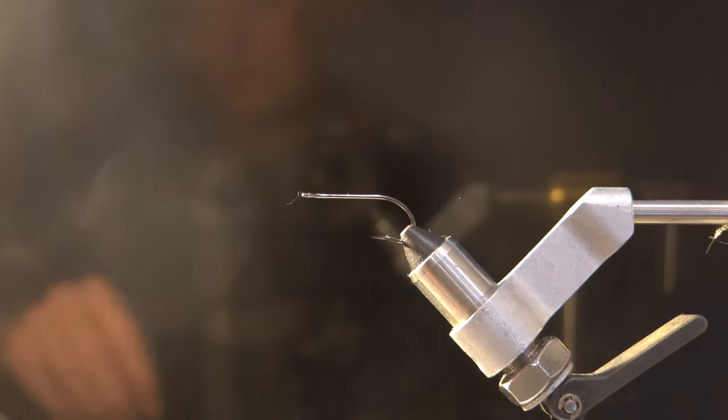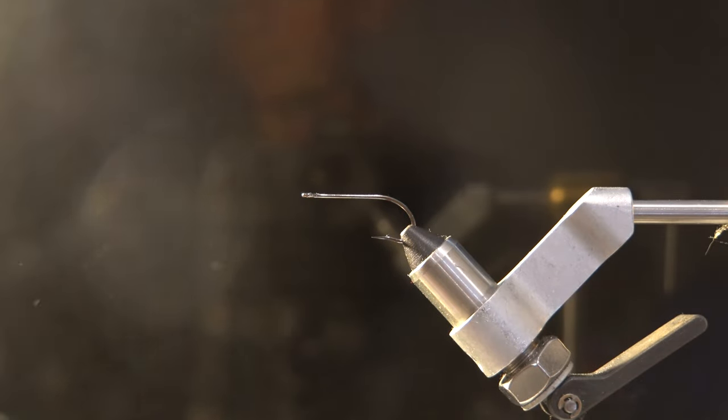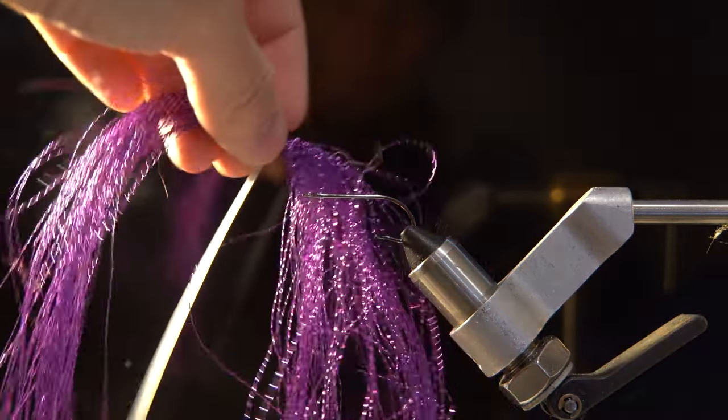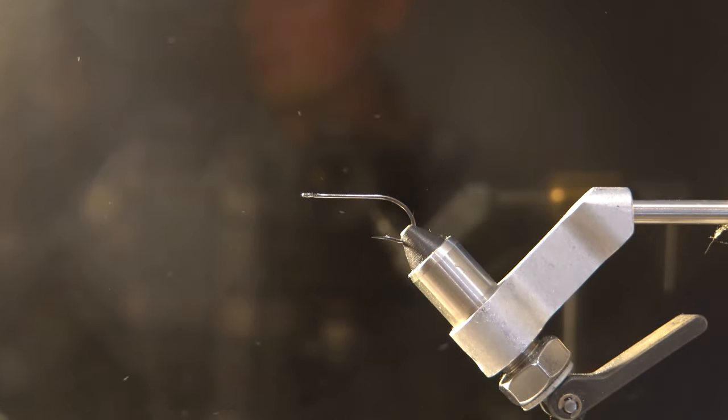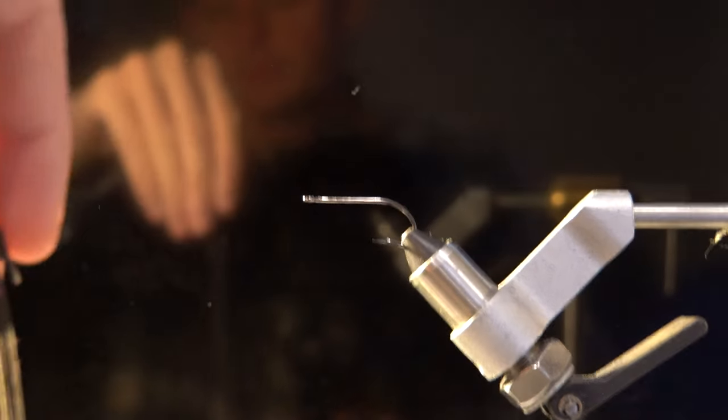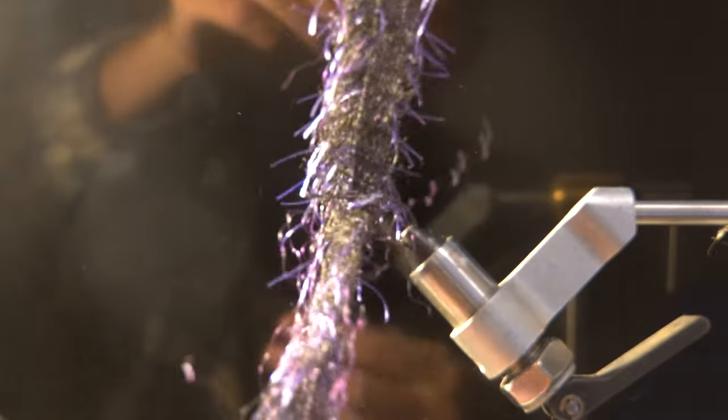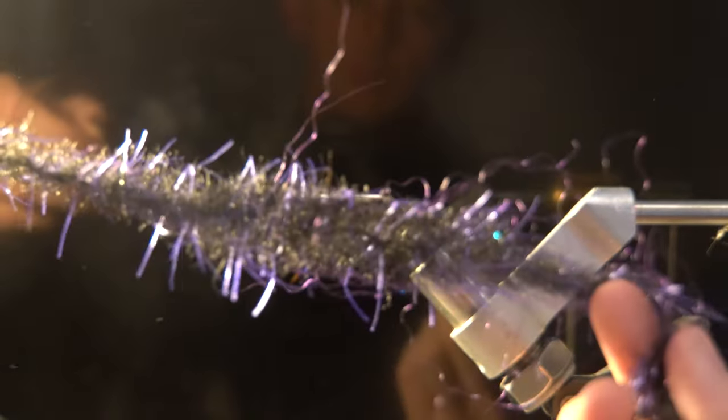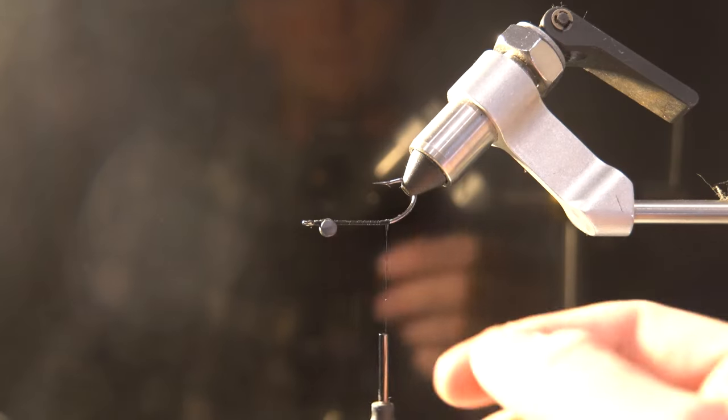From there we're going to be using black thread, just dark black thread. You can use purple. I'm using purple flash, black marabou, purple pseudo hair. We're going to be using black legs and then some purple barred legs as well. And finally, we're using a black EP tarantula brush - black EP with purple legs.